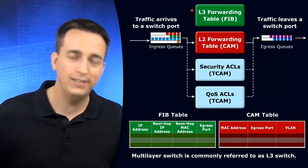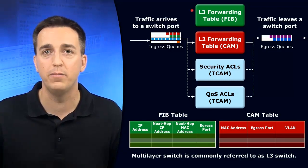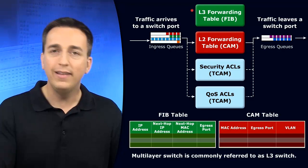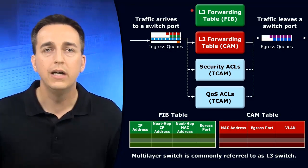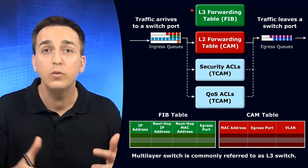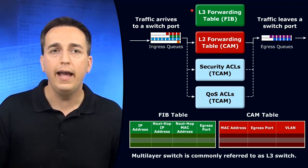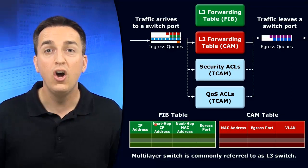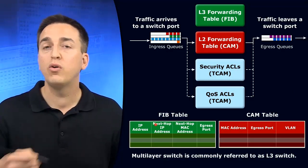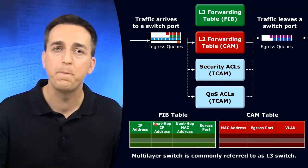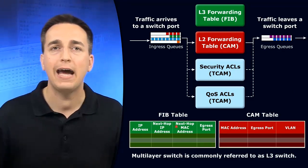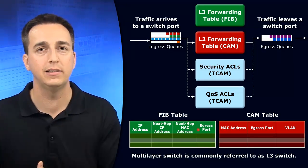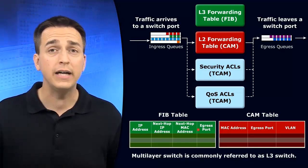The multi-layer switch needs a Layer 3 forwarding table — a FIB, known as the forwarding information base. Inside this forwarding information base, we have the different destination networks that the multi-layer switch has learned about, and what is the next-hop IP address in order to get to that particular destination network. On top of that, to make the process even more efficient and quicker, there is next-hop MAC address information in there as well, along with the egress port that's going to be utilized to reach that particular destination network.